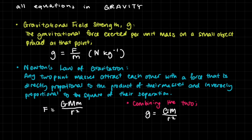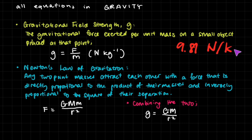We can start with gravitational field strength, g. This is something we've learned quite early on. If you've done your GCSEs or O-levels, you've probably already heard of it. Gravitational field strength is the gravitational force exerted per unit mass on a small object placed at that point in the field. Basically, it's how much force one kilogram of an object experiences when placed within a gravitational field. Near the Earth's surface, g is 9.81 newtons per kilogram — so every kilogram experiences 9.81 newtons. The equation is g equals force divided by mass of the small object.